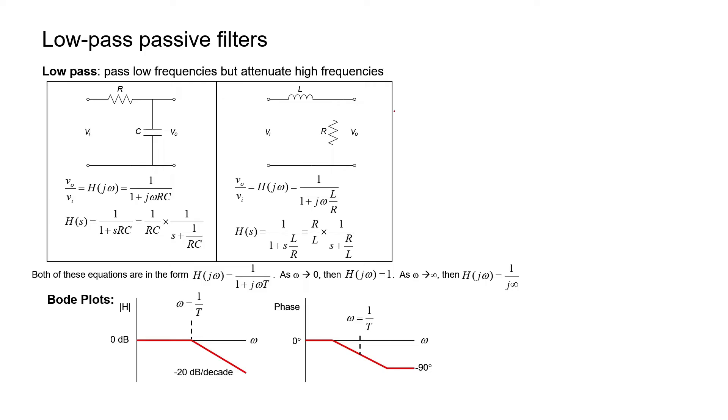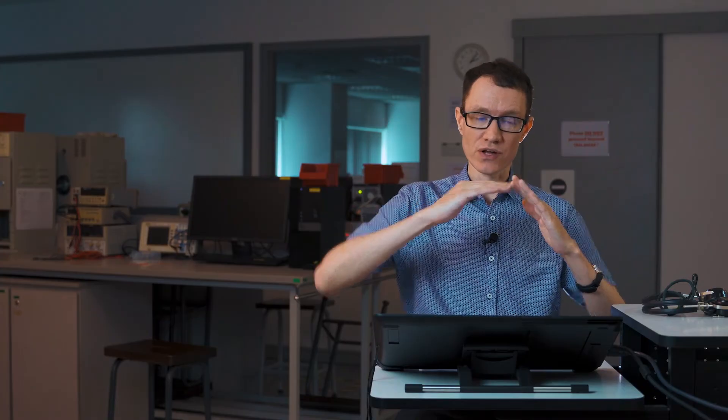We know that these are low-pass filters because of the way they look or because of the transfer functions. Therefore, we know that for low frequencies we're going to get a line at zero decibels. Because they're single-pole filters, we also know that there's going to be a 20 decibel per decade rolloff at the high frequencies. The only thing that we don't know is where these two lines come together — it happens when omega times tau equals 1, or when omega equals 1 over tau.